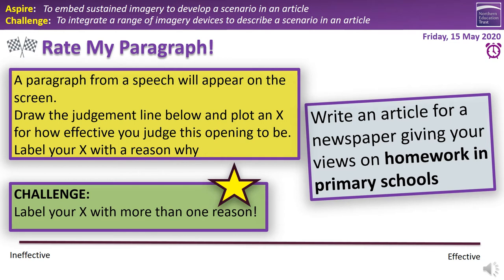To start with, we'll play Rate My Paragraph. A paragraph from a speech is going to appear on the screen, and I want you to draw our judgment line, which we've used previously. Draw a line in your notebook or workbook — about four different lines for the four different paragraphs we'll read. Ineffective on the left, effective on the right. Plot your X and label it with a reason why. I challenge you to label your X with more than one reason. The task is on the right-hand side: write an article for a newspaper giving your views on homework in primary schools. Each of these paragraphs will be based on that task, just to give you a bit of context.